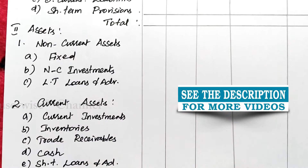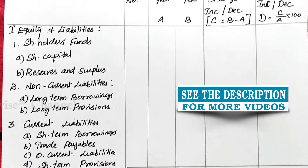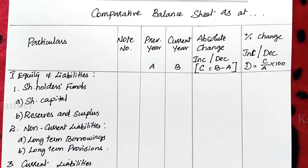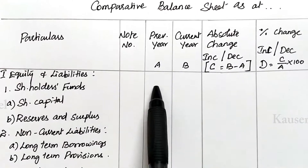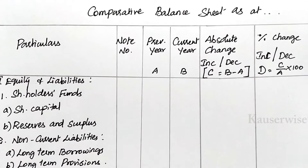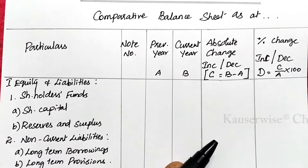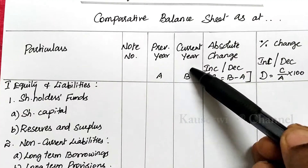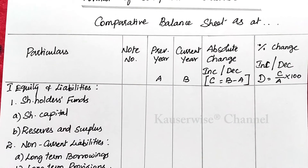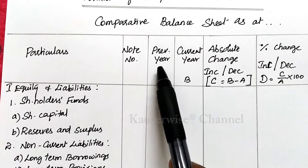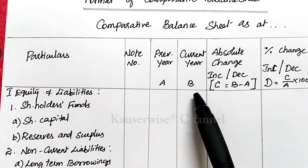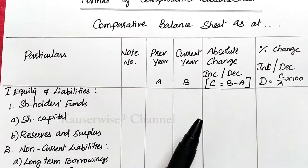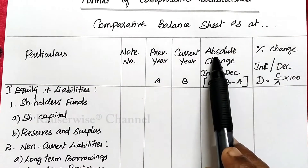This is the format of balance sheet according to revised schedule 6. Now we are going to see how to prepare the comparative balance sheet. Enter all the elements of the balance sheet items, then write the previous year data and current year data — this information will be given in the problem. Two years' balance sheet data will be given; first enter previous year, then current year. Then we need to find absolute change by comparing current year with previous year.